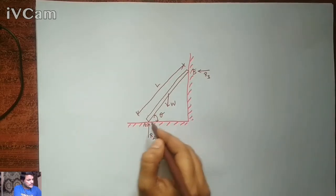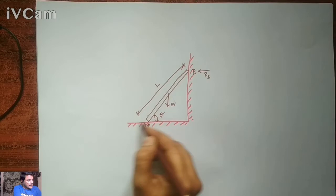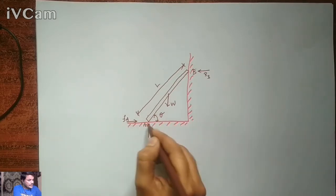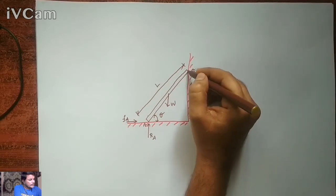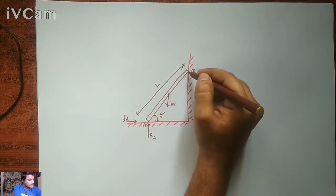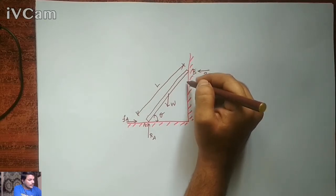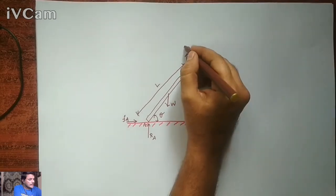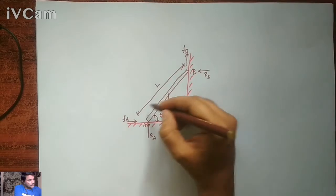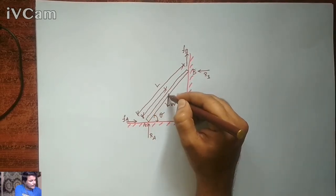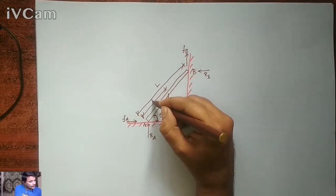Because of the loading, the ladder tries to slide to the left at the floor. To counteract this sliding, there is an opposing frictional resistance F_A at point A. Due to the self-weight and any additional person's weight, at point B on the wall the ladder tries to move downwards. To counteract this downward slip, there is an upward frictional resistance F_B. The weight W acts at L/2 from either end, that is at the center of the ladder.